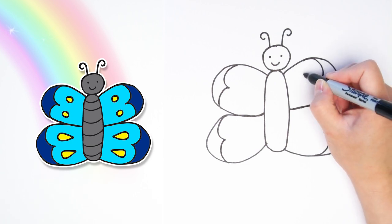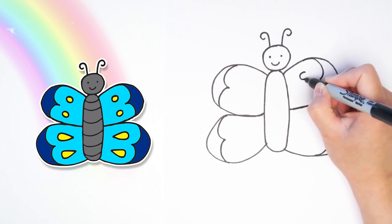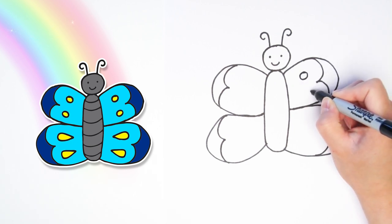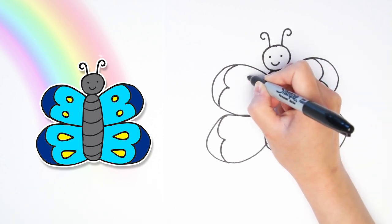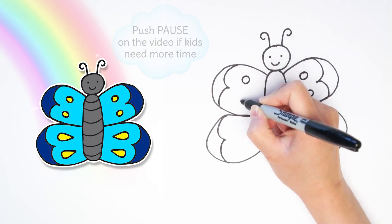Alright, let's add two circles to this top wing right here. And we'll add two circles to the other side, so that they match.